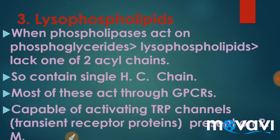The third point is about lysophospholipids. When a phospholipase enzyme acts upon a phosphoglyceride, it results in the formation of lysophospholipids. Lipase is an enzyme which acts on a lipid, so phospholipase acts on a phospholipid. These lysophospholipids contain one acyl chain less — there would be one less fatty acid on the glycerol. So they contain a single hydrocarbon or fatty acid chain. Most of these act through G-protein-coupled receptors.